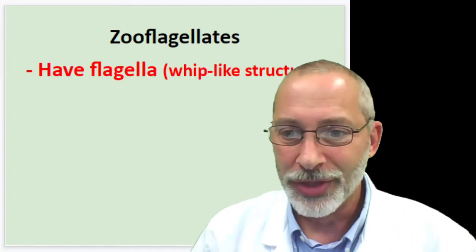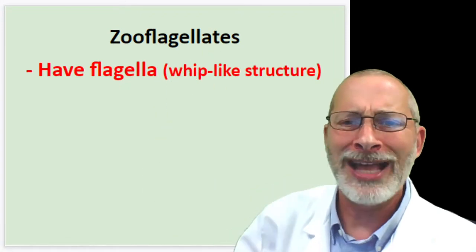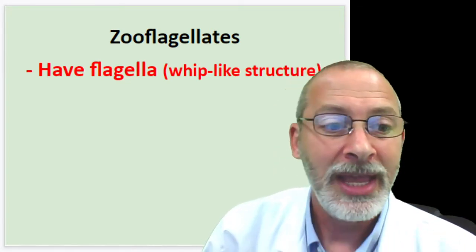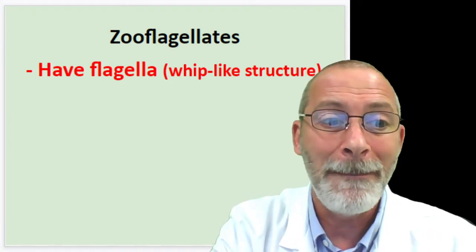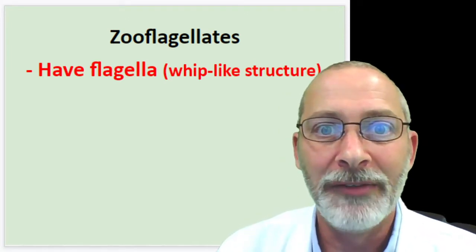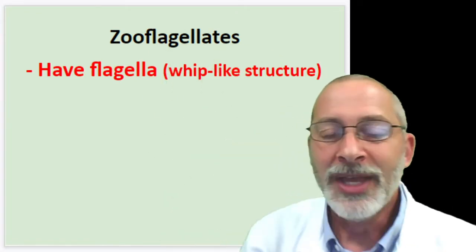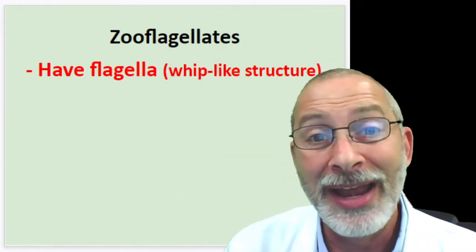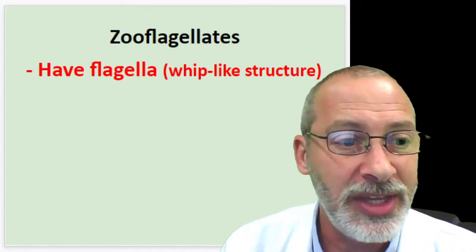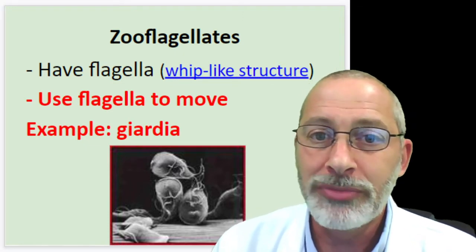The next group are the zooflagellates. Zoo refers to animal - that makes sense. Zooflagellates are called that because they have a structure called a flagella. A flagella is a whip-like structure. These zooflagellates can use their whip to move around and to capture prey as well. They are very talented.